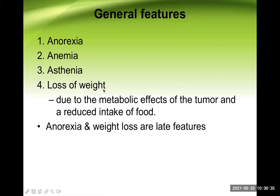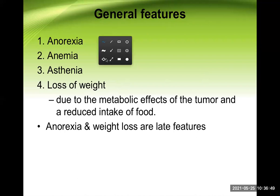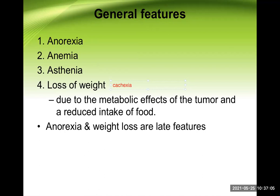Loss of weight in malignancy is because of the metabolic effects of the tumor and reduced food intake. Extreme loss of weight is known as cachexia. Gastric cancer — just like any other cancer — is one cause of cachexia. This is a direct effect of the rapidly growing tumor utilizing all nutrients, combined with anorexia and, if causing gastric outlet obstruction, repeated vomiting leading to severe malnutrition.